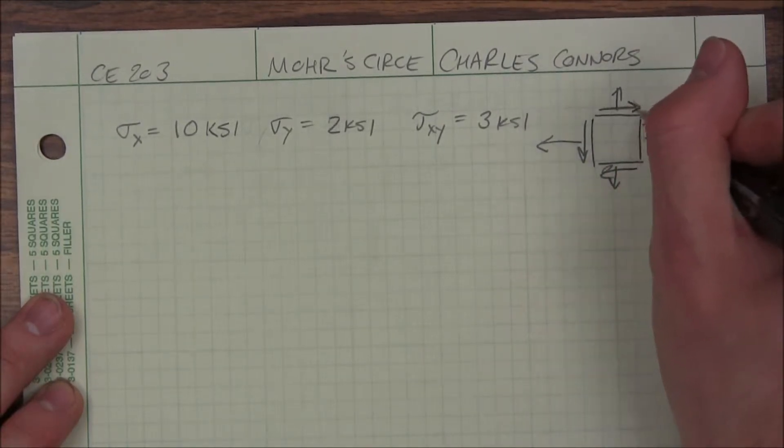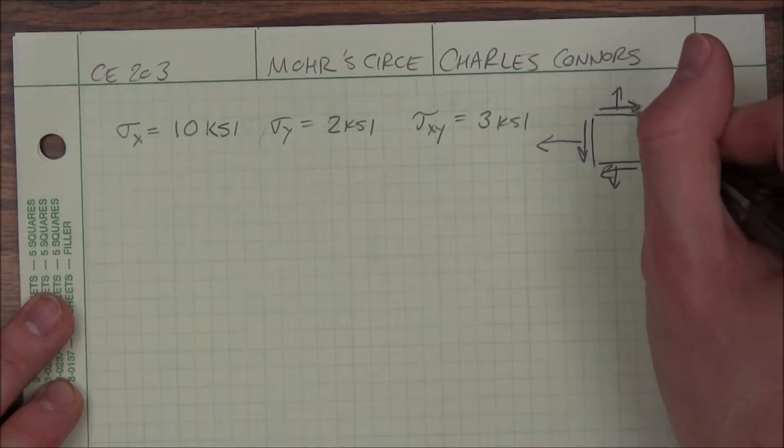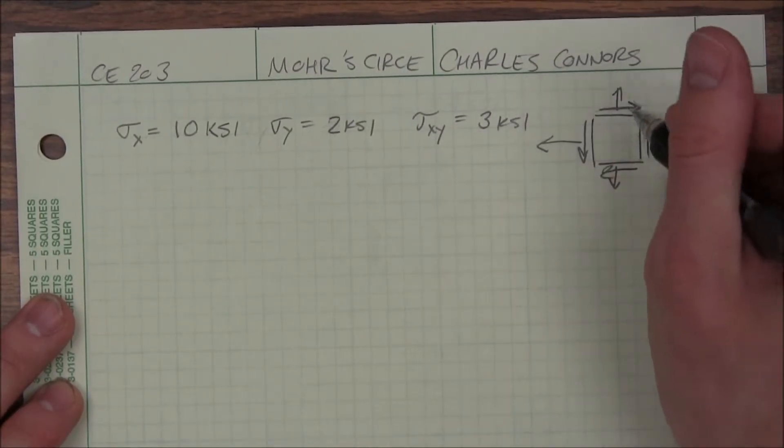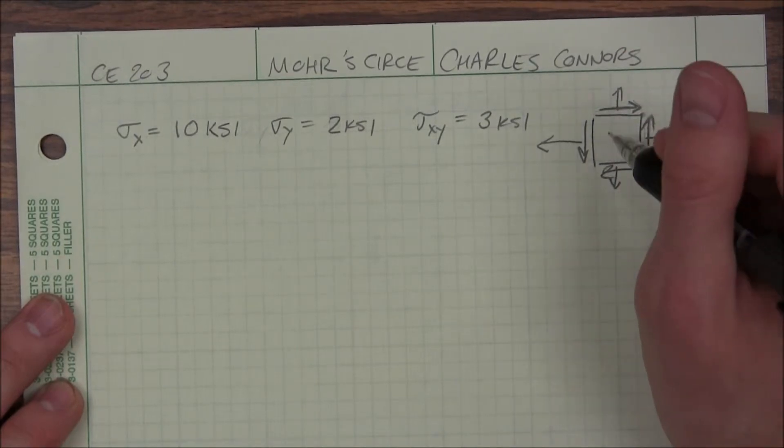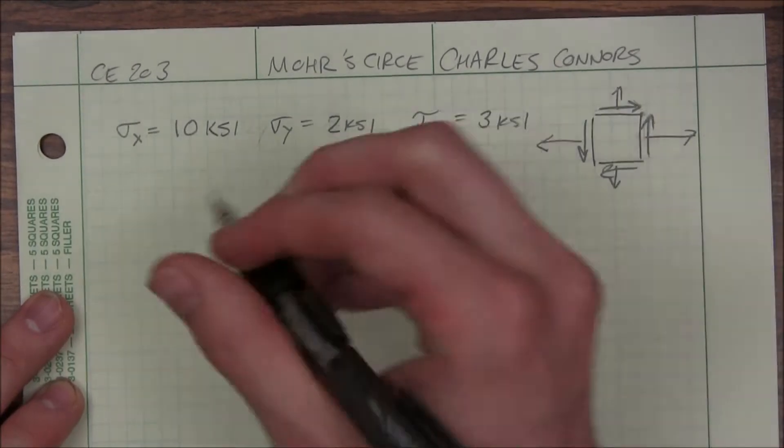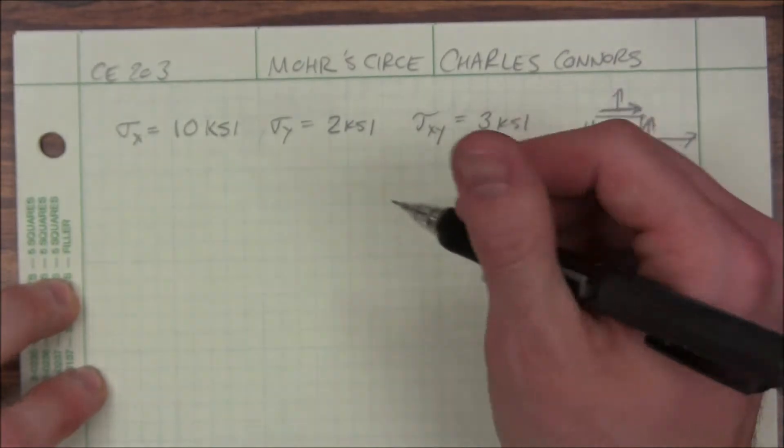And these two arrows are always going to be pointing either towards each other or away from each other. If it's pointing towards this corner, it's a positive tau XY. They'll be pointing away from that corner if it's a negative tau XY. But let's draw Mohr circle here.